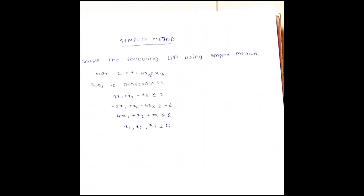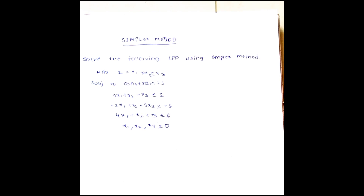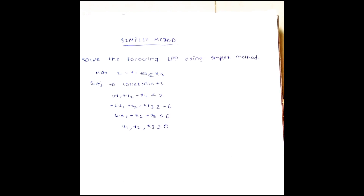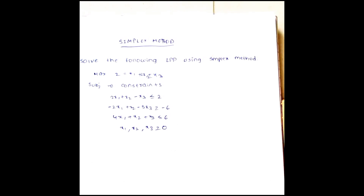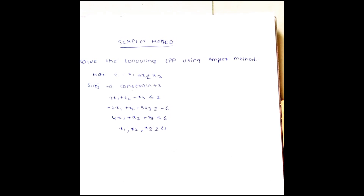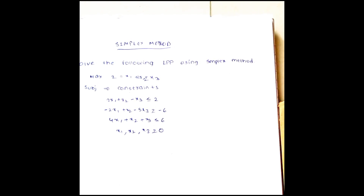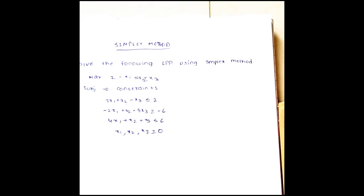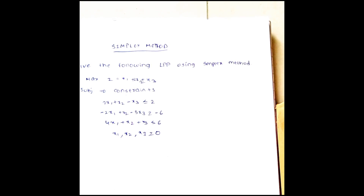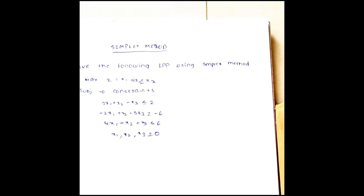Maximize z equal to x1 plus 2x2 plus x3, subject to the constraints: 2x1 plus x2 minus x3 is less than or equal to 2; minus 2x1 plus x2 minus 5x3 greater than or equal to minus 6; 4x1 plus x2 plus x3 less than or equal to 6; such that x1, x2, x3 is greater than or equal to 0.